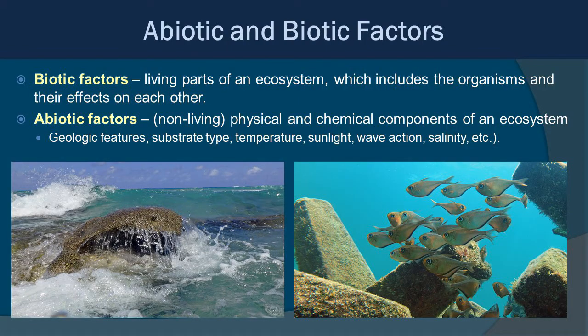This brings up the concept of biotic versus abiotic factors. Biotic factors are living parts of an ecosystem, which include the organisms and their effects on each other. An abiotic factor is a non-living physical or chemical component of the ecosystem, such as the type of substrate — sand, rock — temperature, light, wave action, salinity. Those sorts of things are non-living.